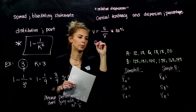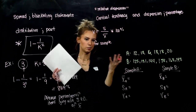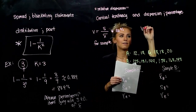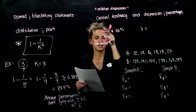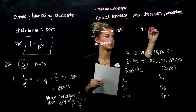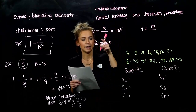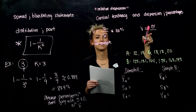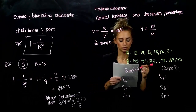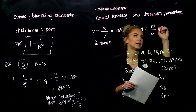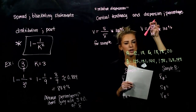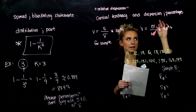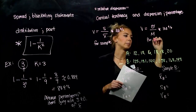For a sample, the coefficient of variation is v = (s / x-bar) × 100%. For a population, it uses sigma divided by mu, times 100%. The majority of our examples are samples, so we'll mostly use the sample version. This is how much of the whole the standard deviation represents — making it relative to the specific data.